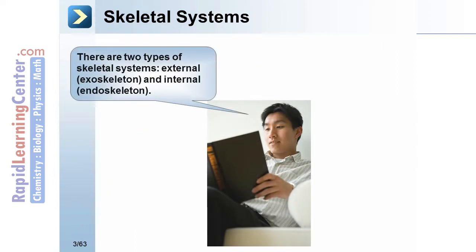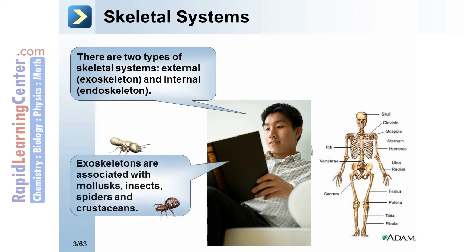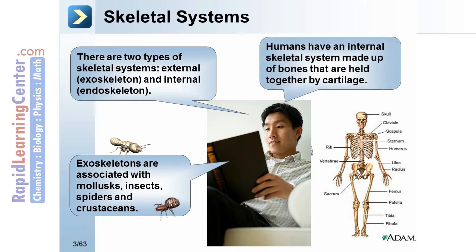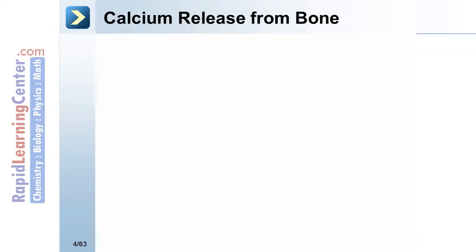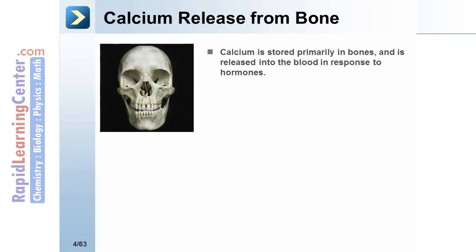There are two types of skeletal systems: external exoskeleton and internal endoskeleton. Exoskeletons are associated with mollusks, insects, spiders, and crustaceans. Humans have an internal skeletal system made up of bones held together by cartilage. Calcium is stored primarily in bones and is released into the blood in response to hormones.